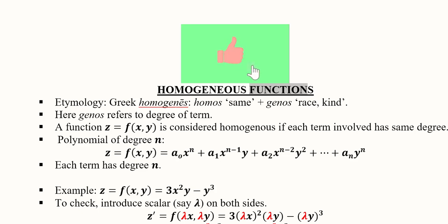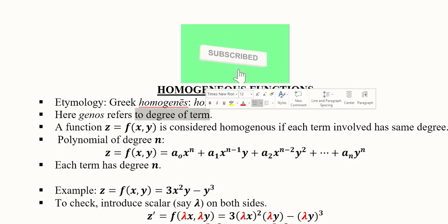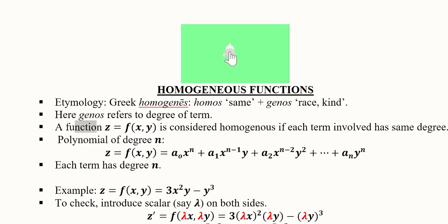The salient feature of a function is the degree of the term involved in it. Let us assume there is a function z equals f(x, y). This function has z as the dependent variable and x and y as the independent variables. It is considered homogeneous if each term involved has the same degree.